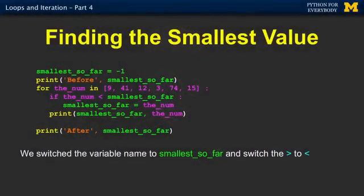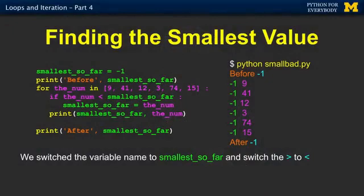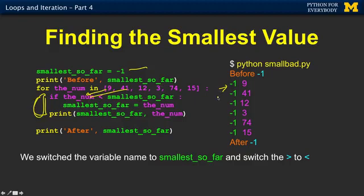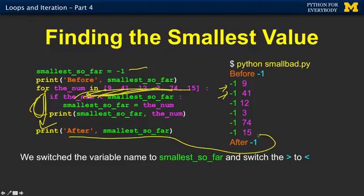This is what happens when you run it. We start out — the smallest so far is negative one. We come in with nine: is nine less than negative one? No, it is not. So we skip. The smallest we've seen so far is negative one. Is 41 less than negative one? No. So we skip. Twelve? No. Three is not smaller than negative one. 74 is not smaller than negative one. 15 is not smaller than negative one. So out we come, and the smallest we've seen so far is negative one.